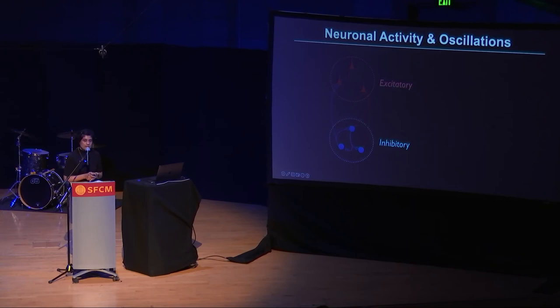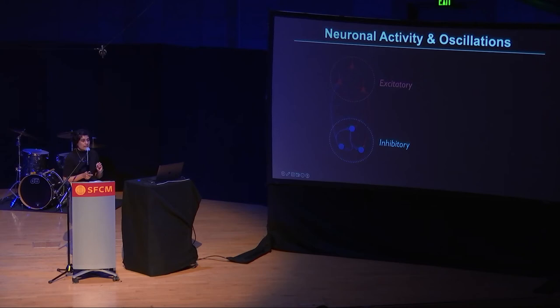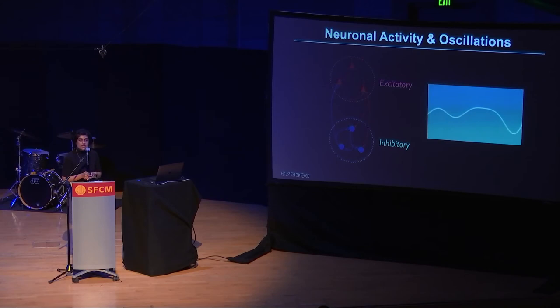Excitatory neurons are neurons that stimulate or enhance the activity of other neurons they are connected to. Inhibitory neurons, on the other hand, are neurons that inhibit or shut down the activity of neurons they are connected to. Neural oscillations are produced as a complex combination of the activity of these excitatory and inhibitory neurons.